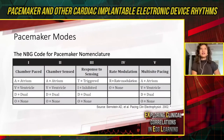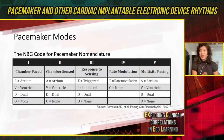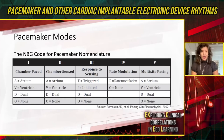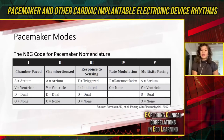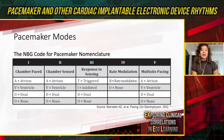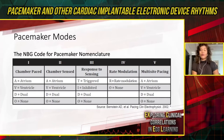In the 1960s, the NBG code was developed in Nice, allowing different countries to understand pacemaker nomenclature. There are five positions: the first is the chamber being paced, the second is the chamber sensed, the third is the response to sensing, the fourth is rate modulation, and the fifth — not commonly used anymore — is multi-site pacing. In positions one and two: A stands for atrium, V for ventricle, D for dual, and O for none. In position three: T is triggered, I is inhibited, D is both. In position four: R is rate response and O is none.